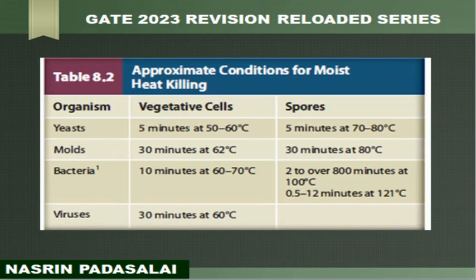Next is the approximate condition for moist heat killing — the approximate conditions required for killing by autoclaving method. First, yeast: vegetative cells of yeast are killed in 5 minutes at 50 to 60 degrees Celsius. Whereas spores of yeast are killed in 5 minutes but at increased temperature — 70 to 80 degrees Celsius is sufficient for killing the spores of yeast.